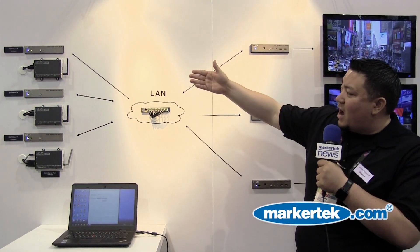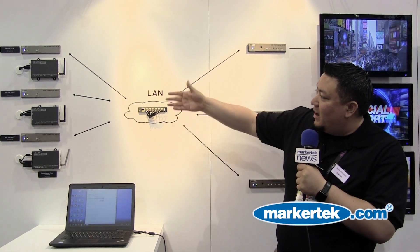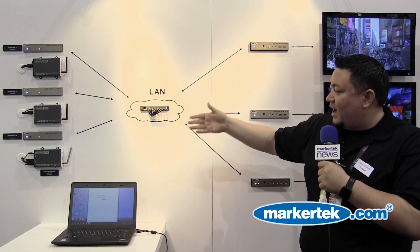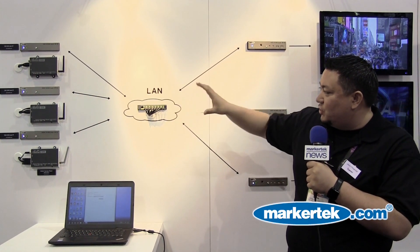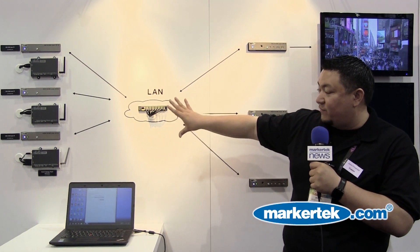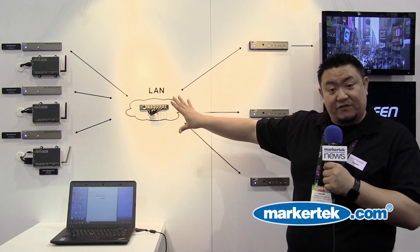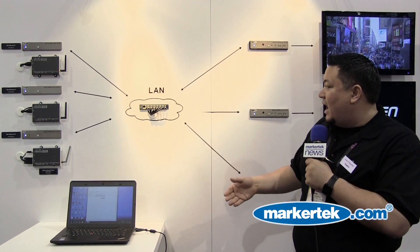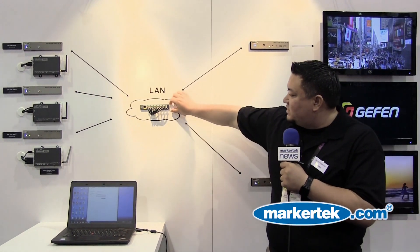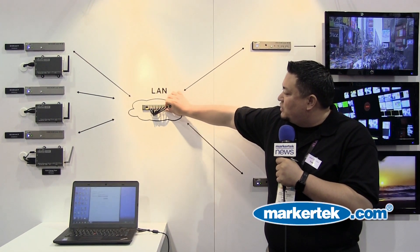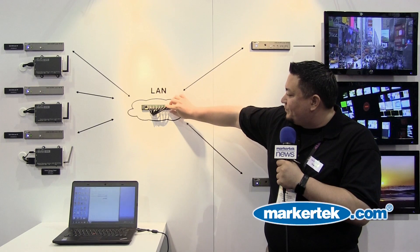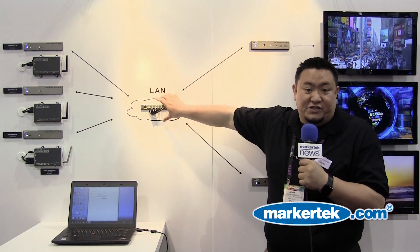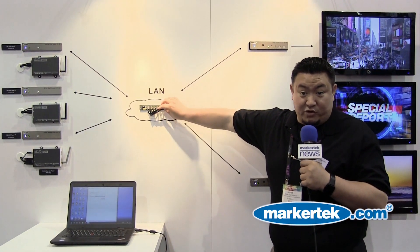What we have right now are three sender units: an HDMI, a DVI, and a VGA KVM device, hooked up with some of our digital signage players. Of course, the source device could be a workstation with a USB. Running through a single network smart switch — we've got eight ports here — so it's running into what you'd consider a standard network infrastructure.